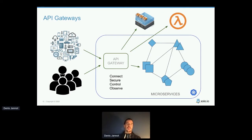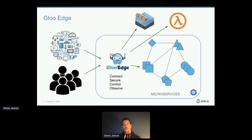You want to pass information to the application about who the user is — these are just examples among many others. That's the first step: you want to secure the edge with an API gateway. We have one called Gloo Edge, based on Envoy, and I just wanted to introduce that concept as it's generally the first step people follow.